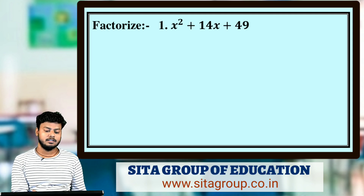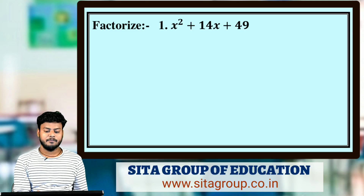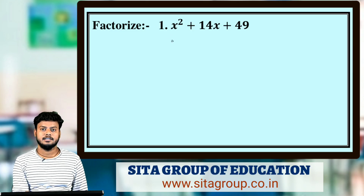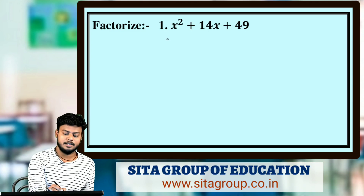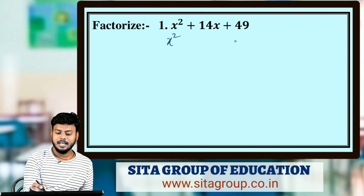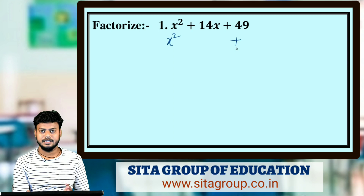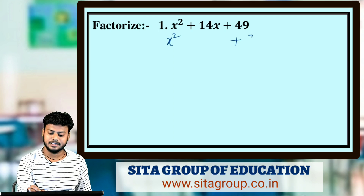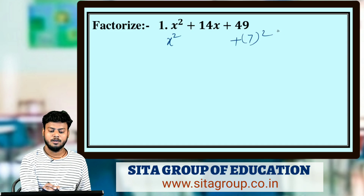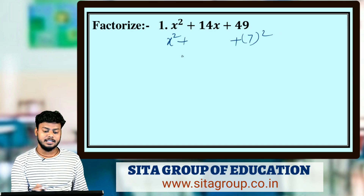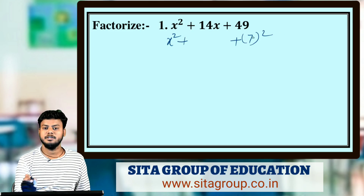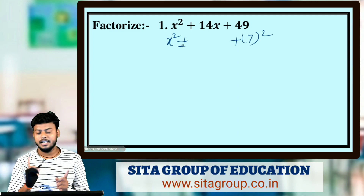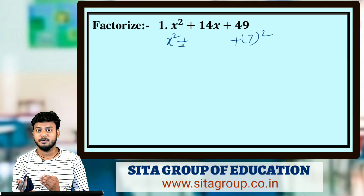Before solving this question, first of all look at the screen — check if any number is a perfect square. x² is a perfect square, and 49 — is this a perfect square? 49 can be written as 7², so this looks like a² + b².